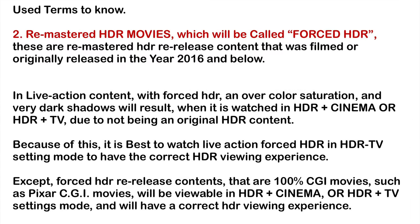Term 1: 3D FX. The best contents to use are 4K or CGI. With the right content, the 4K or CGI looks 3D without the use of 3D glasses, especially for new movies with a very sharp resolution image and movies filmed with 3D in mind. Some contents may have a soap opera effect but still maintain film look quality. Best results may vary depending on the content's image quality. Term 2: Remastered HDR movies, called Forced HDR. These are remastered HDR re-release content filmed or originally released in 2016 and below. In live action content with forced HDR, over-color saturation and very dark shadows will result when watched in HDR plus cinema or HDR plus TV, due to not being original HDR content. Therefore, it is best to watch live action forced HDR in HDR TV setting mode to have the correct HDR viewing experience. Exception: forced HDR re-release contents that are 100% CGI movies, such as Pixar CGI movies, will be viewable in HDR plus cinema or HDR plus TV settings and will have a correct HDR viewing experience.